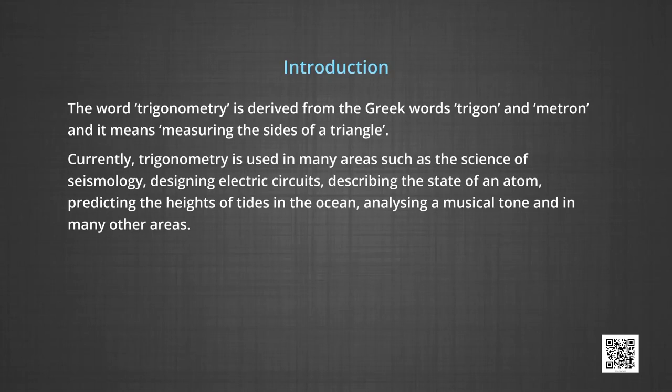First, let us understand what is the meaning of the word trigonometry. Trigonometry is derived from the Greek words trigon and metron, and it means measuring the sides of a triangle. There are many areas such as the science of seismology, designing electric circuits, describing the state of an atom, predicting the height of tides in the ocean, analyzing musical tone, and many other areas where trigonometry is applicable.